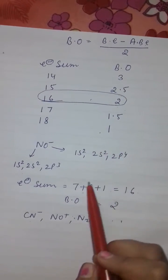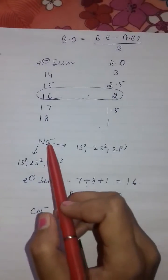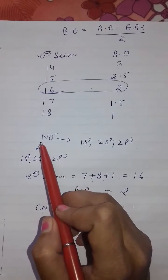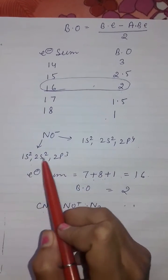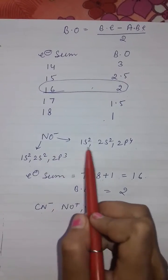In this way, for example, here we are taking an example of NO⁻. The electronic configuration of nitrogen is 1s² 2s² 2p³ and oxygen is 1s² 2s² 2p⁴.